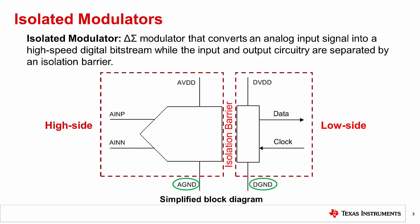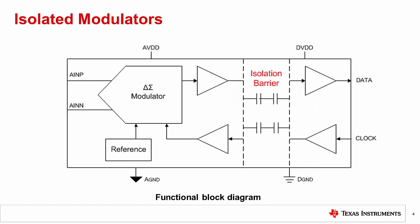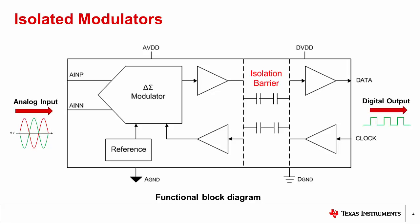So how is an isolated modulator different from a non-isolated modulator? Let's take a closer look at the functional block diagram of an isolated modulator. As previously mentioned, isolated modulators take an analog signal on the input and produce a digital bit stream on the output. The input of an isolated modulator is fully differential and drives a delta-sigma modulator that continuously oversamples the analog input signal.